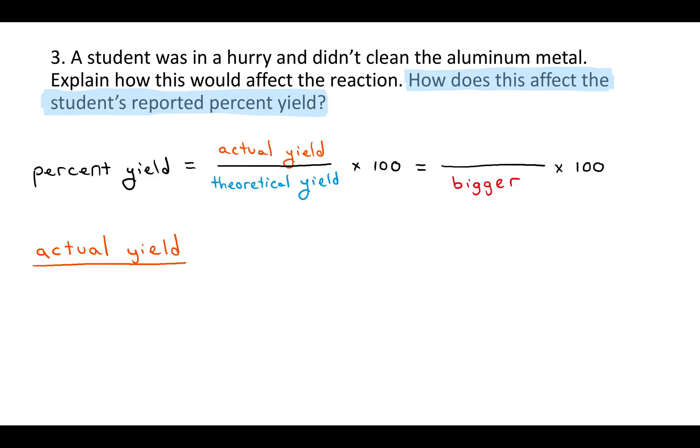Now let's consider the actual yield. The actual yield is what you get when you actually do the experiment. You go into the lab, and some things do stick to glass containers, or they do stick to the filter paper. They do evaporate away. And so you get less than 100% efficiency in your recovery. What you actually get, that's your actual yield.